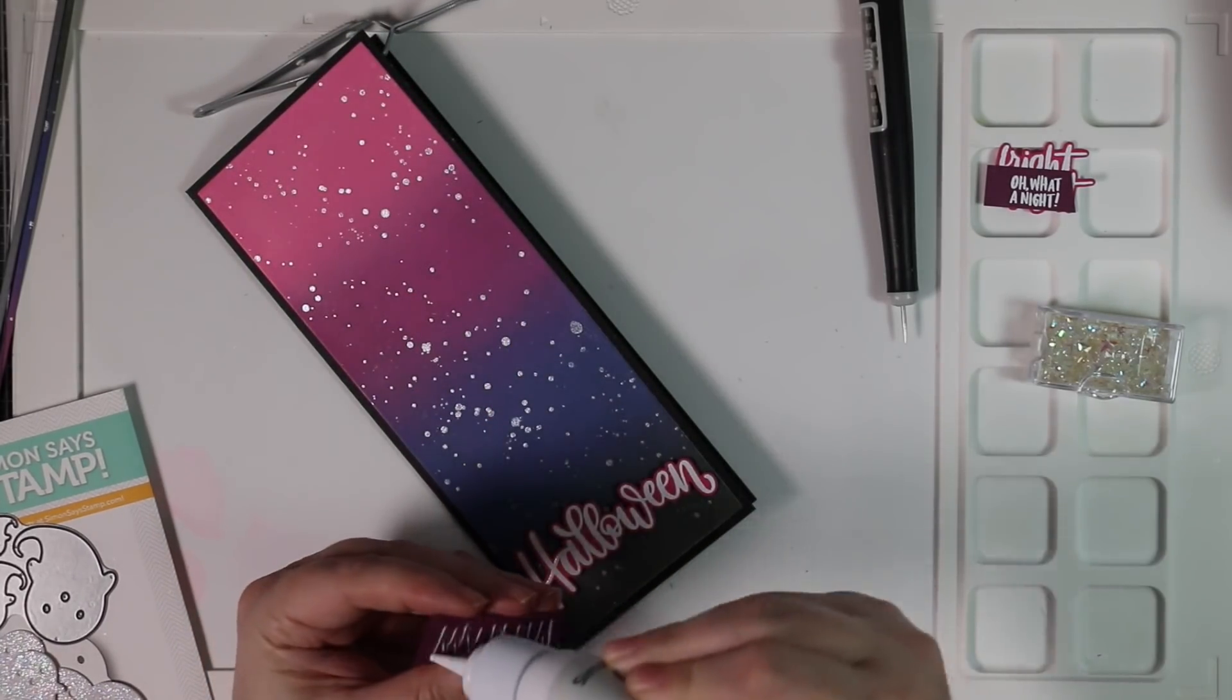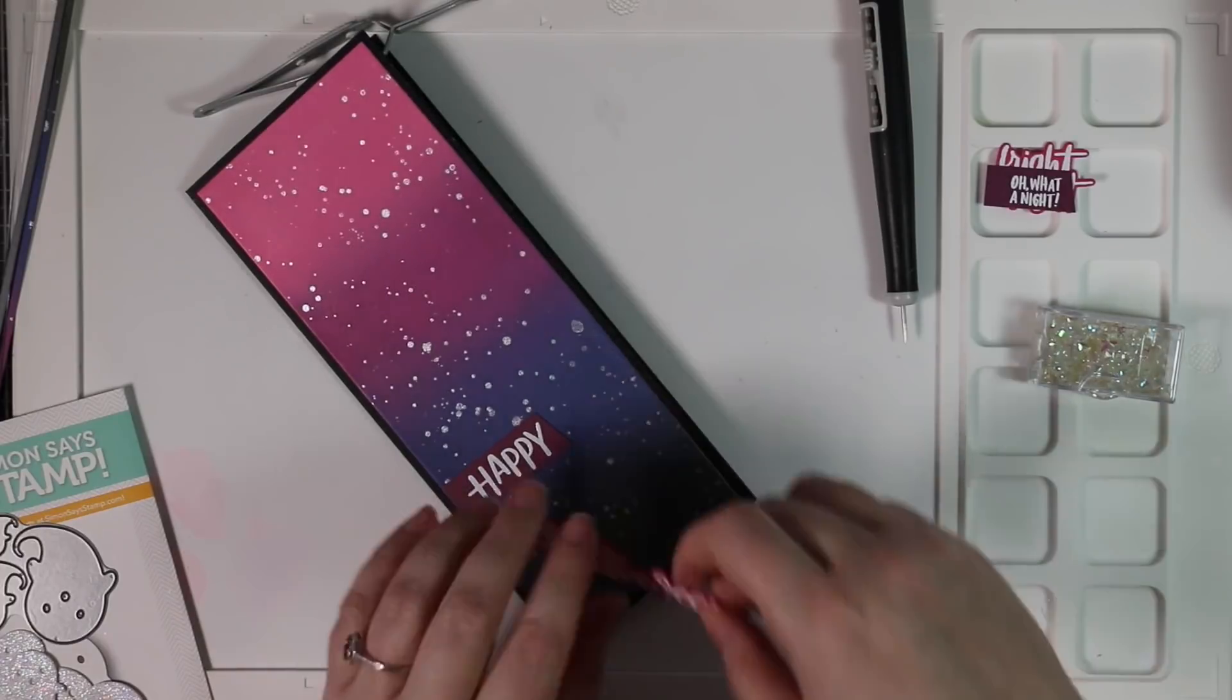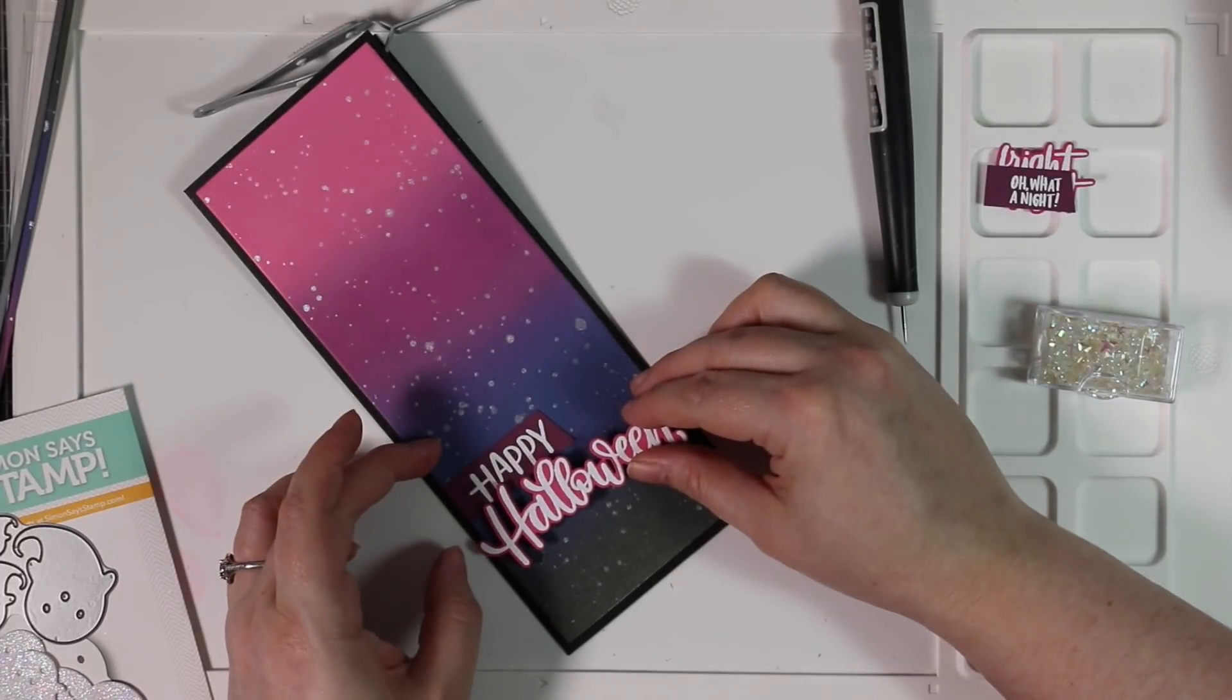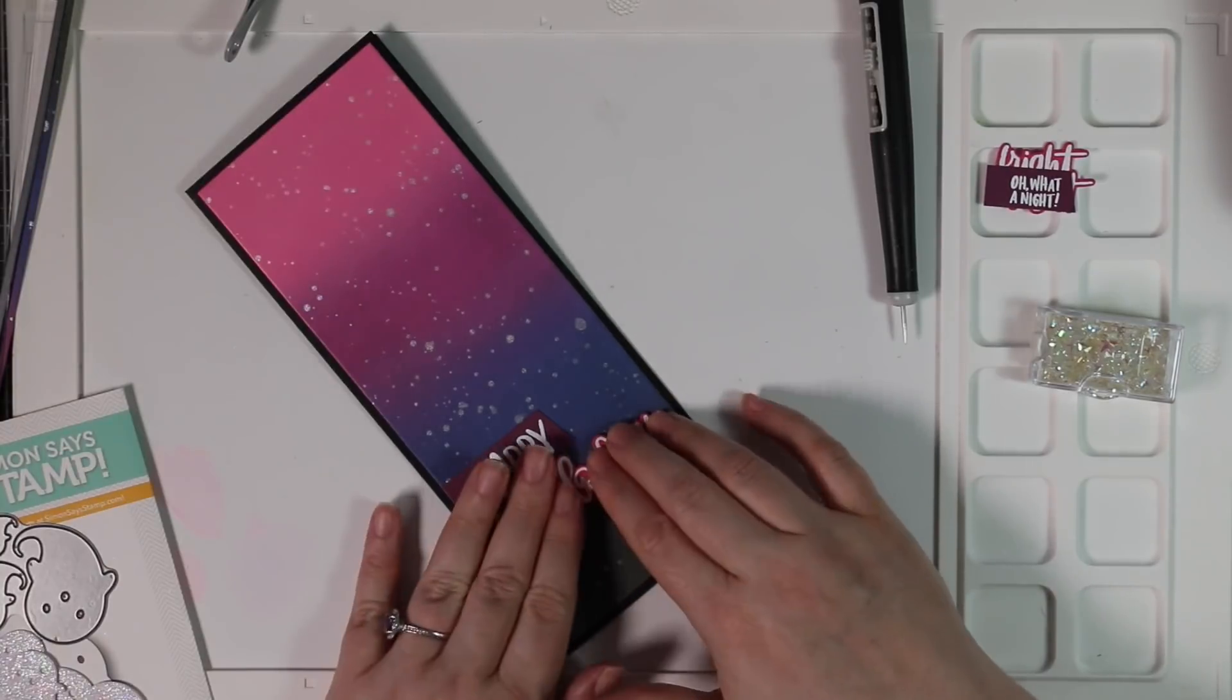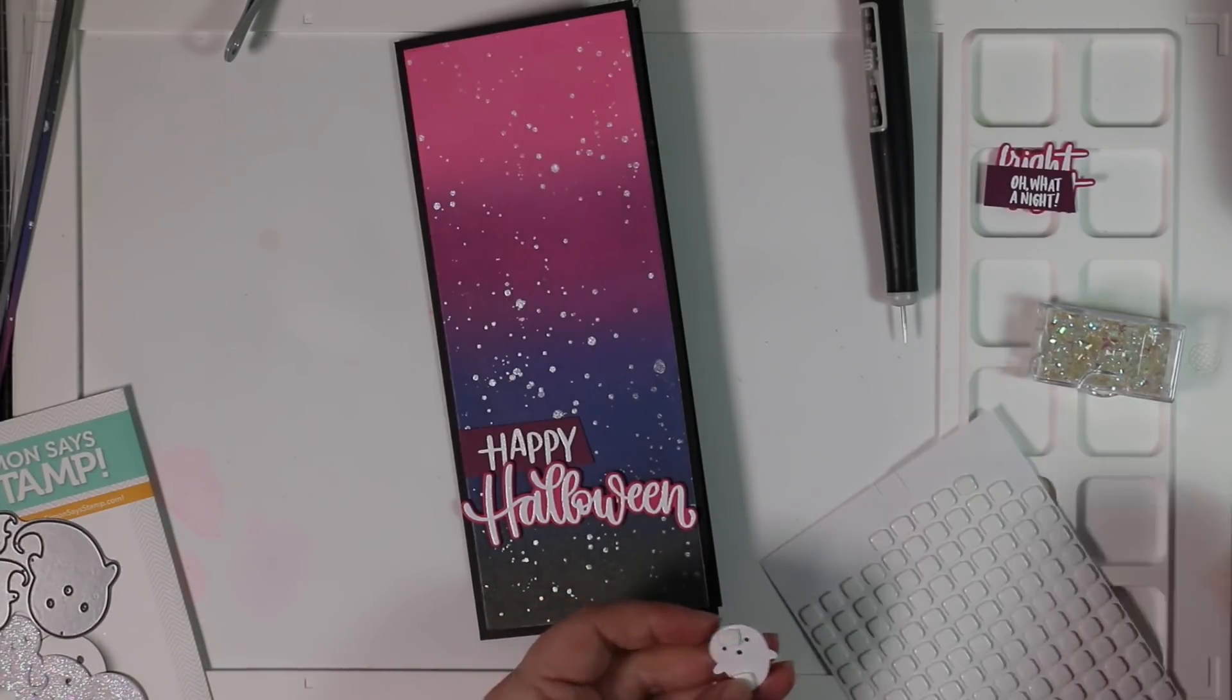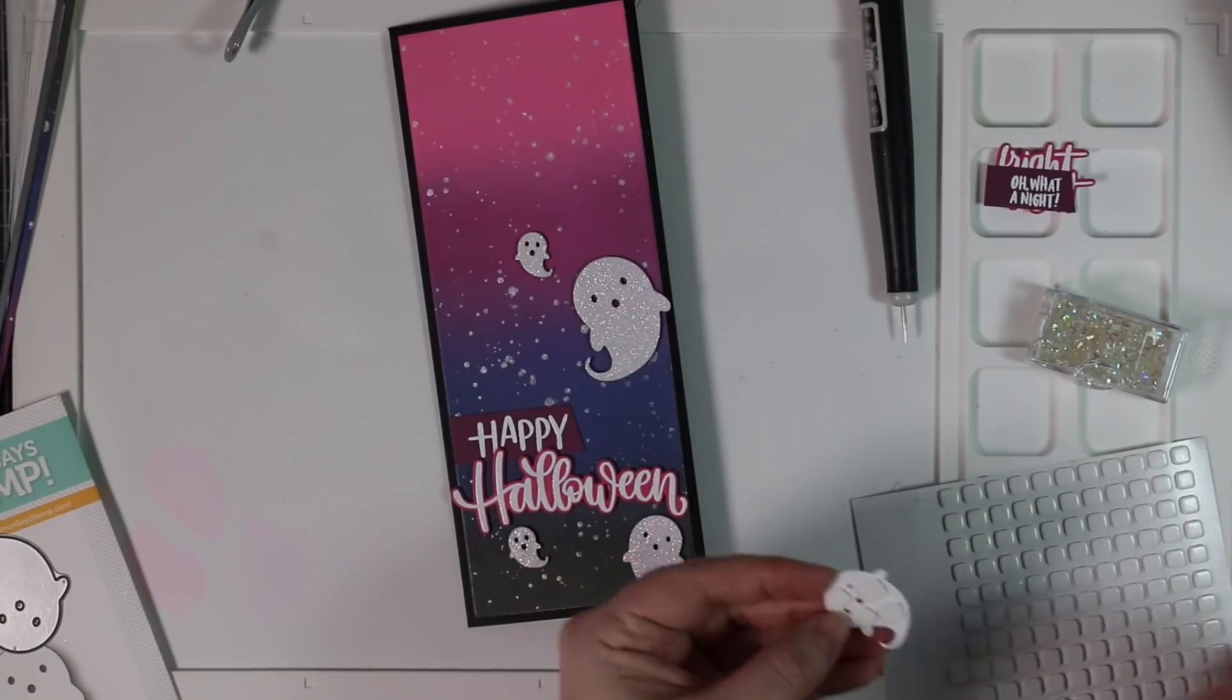So once I've got those adhered together, I can start adhering all the elements to my cards. I'm going to adhere my sentiments. And then all of these little ghosts that I die cut from that white glitter paper, those I'm going to pop up with just little bits of thin 3D foam squares. So it pops them up a little bit, but those aren't as thick as standard. The regular foam squares are just standard dimensionals, that sort of thing. So I'm going to pop several of these onto my card, just kind of making it look like they're floating into this fun, spooky, pinky purple sky. So adhered all those into place.